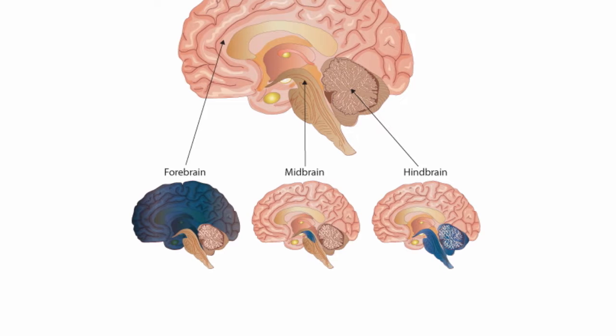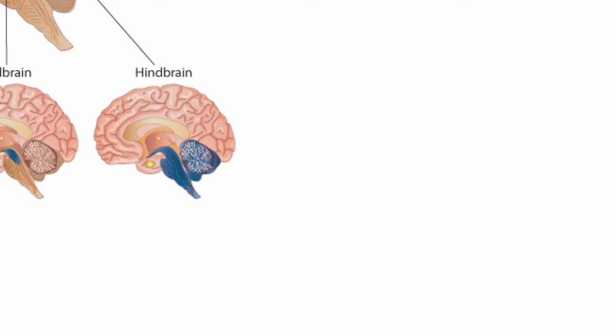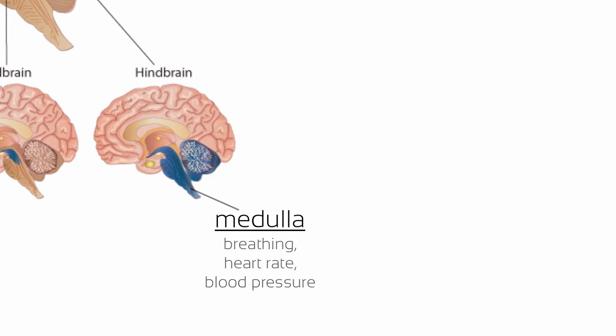As you can see, the spinal cord directly connects with the hindbrain, which contains a number of important structures. The medulla is the physical connection between the brain and the spinal cord, and it's responsible for life functions such as breathing, heart rate, and blood pressure. If this structure is damaged, you might have difficulty breathing and regulating your heart rate — in fact, damage to it usually results in death.